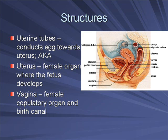There's also the uterus, which is the female organ where a fetus will develop. If an egg does get fertilized, it goes to the uterus, gets implanted in the uterine wall, and starts to develop there. Finally, the vagina is the female copulatory organ and also the birth canal. You can see on that structure the vagina connects to the outside and then goes directly to the uterus.